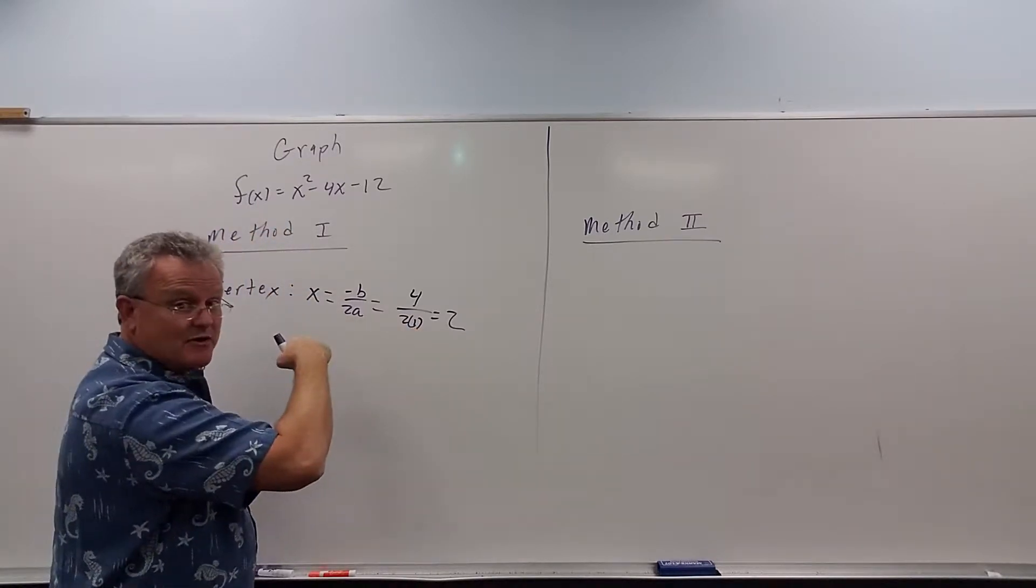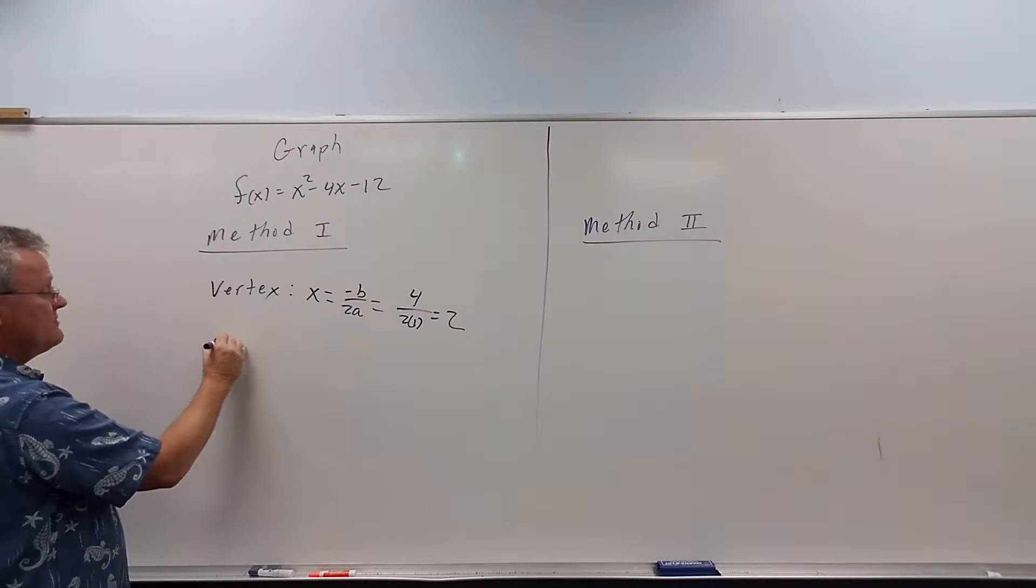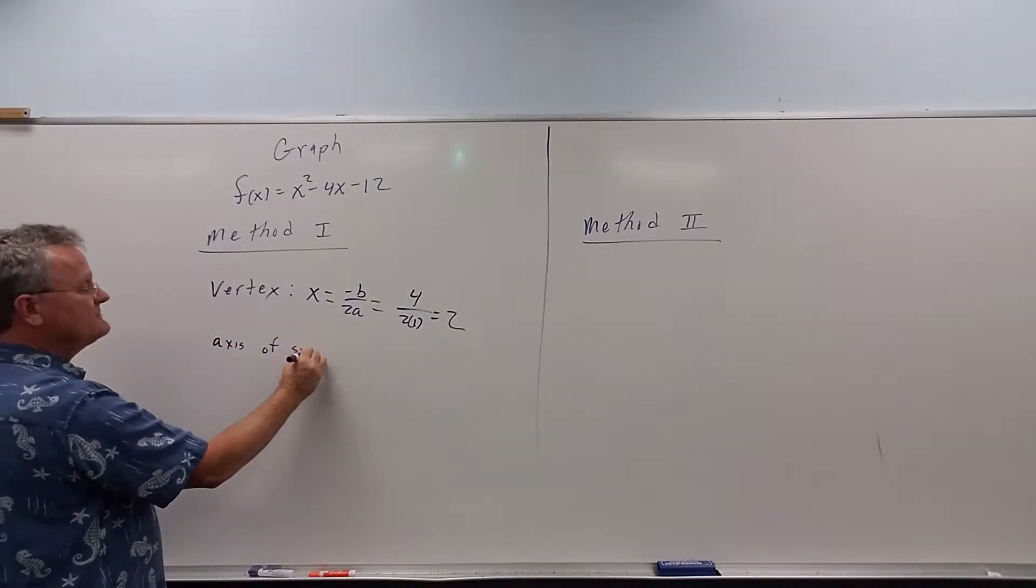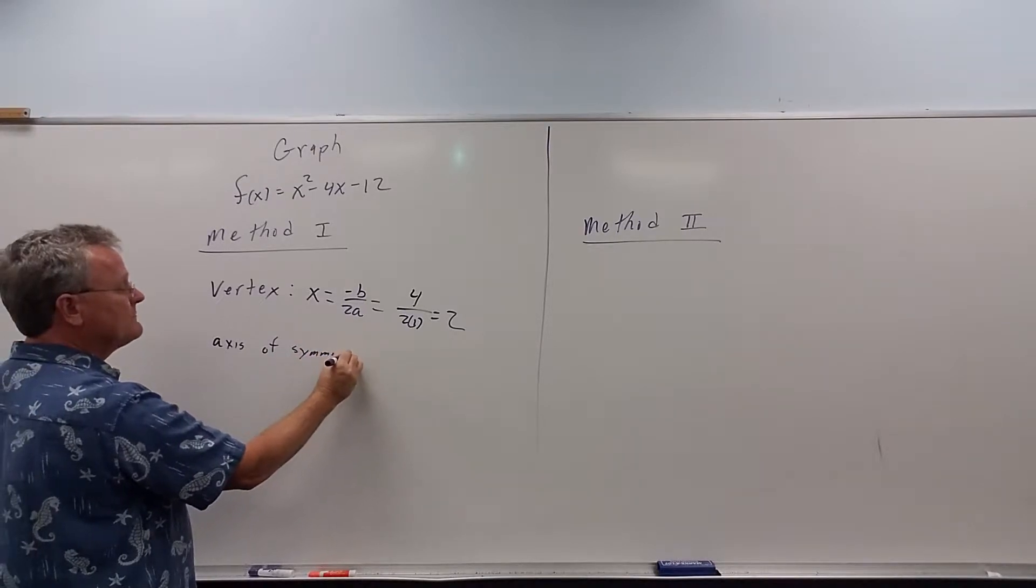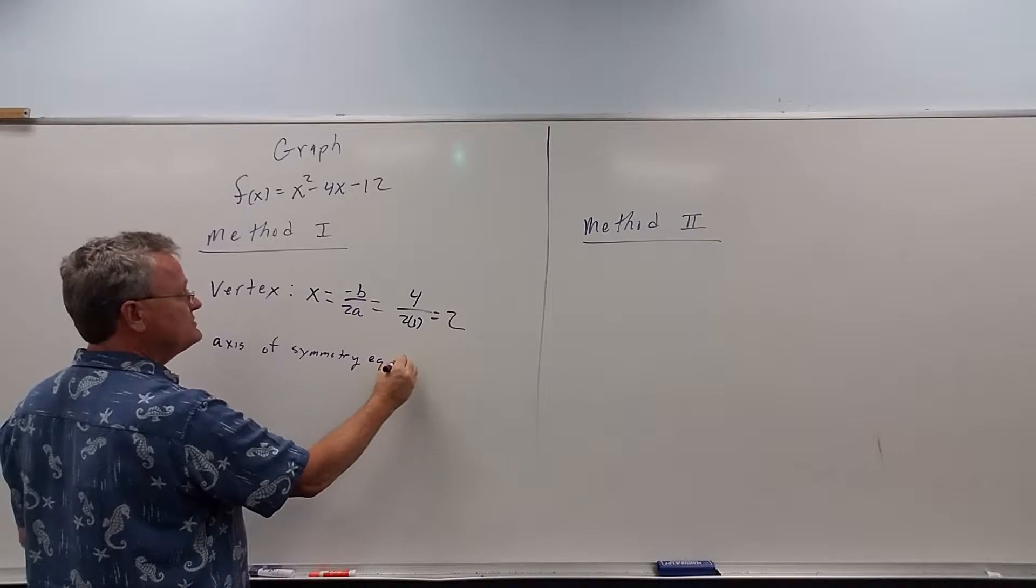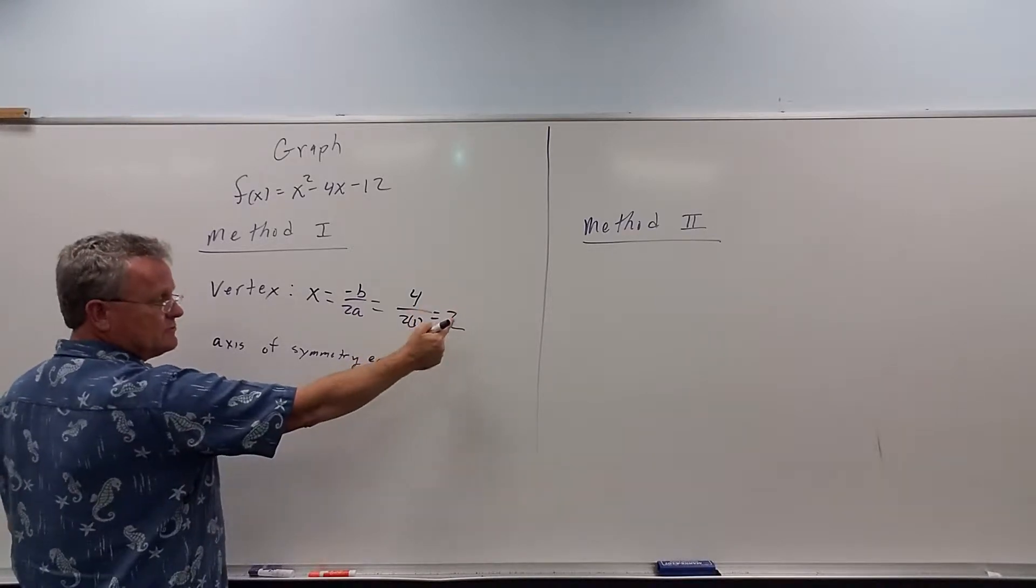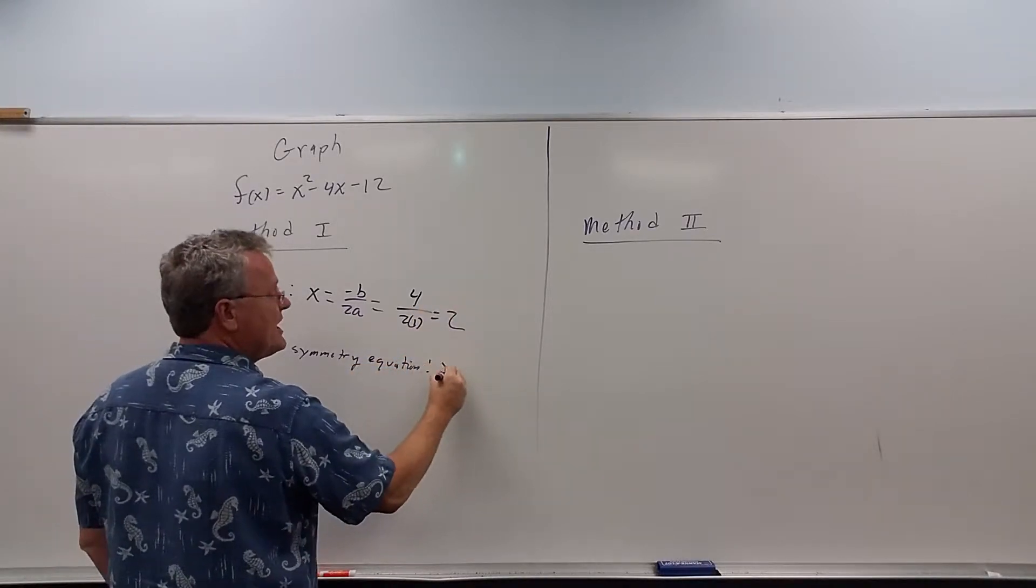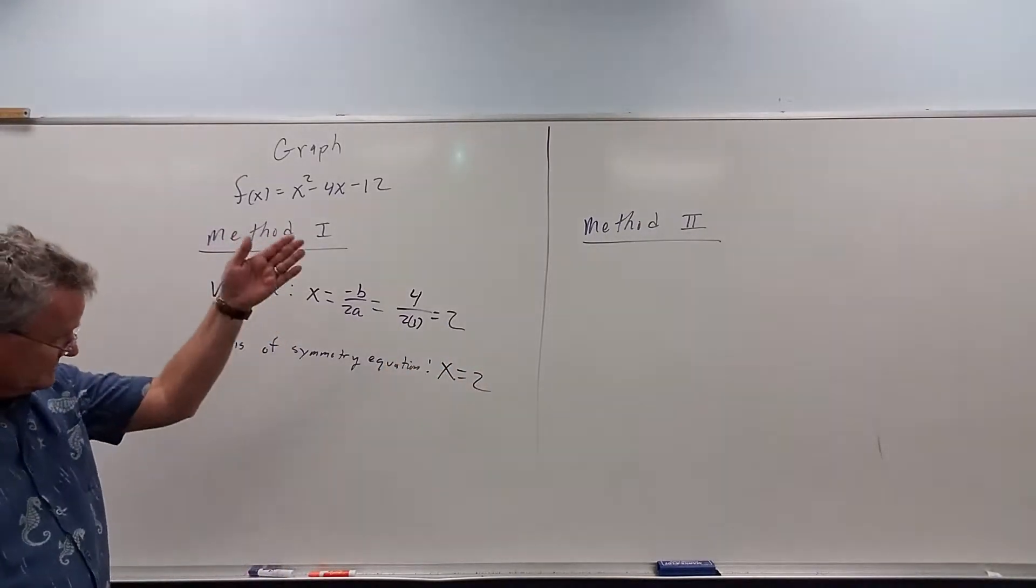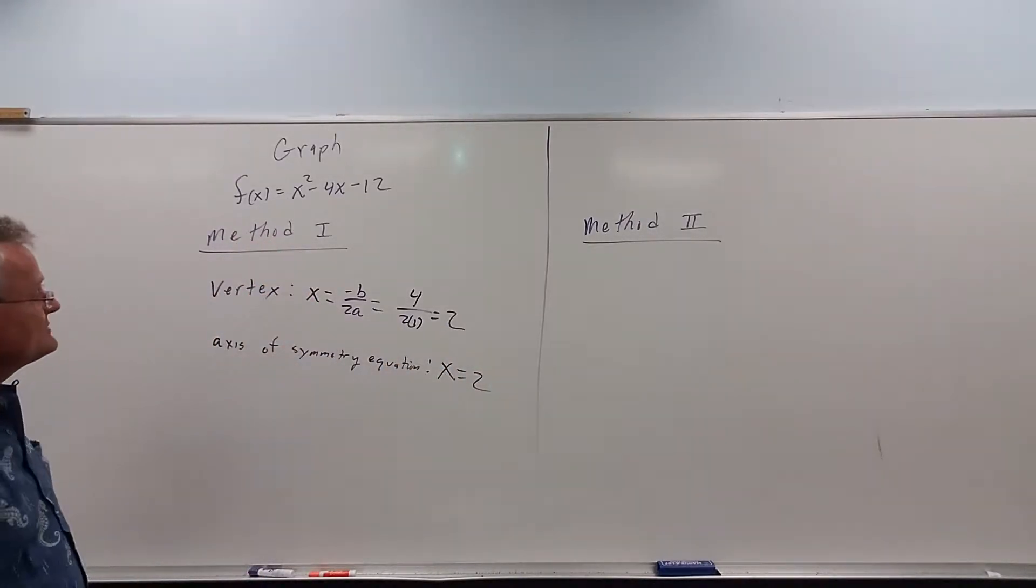Notice, as we talked about in the last video, the equation for the axis of symmetry. The equation is this number here. It's just x equals that number. That is the equation for the axis of symmetry.